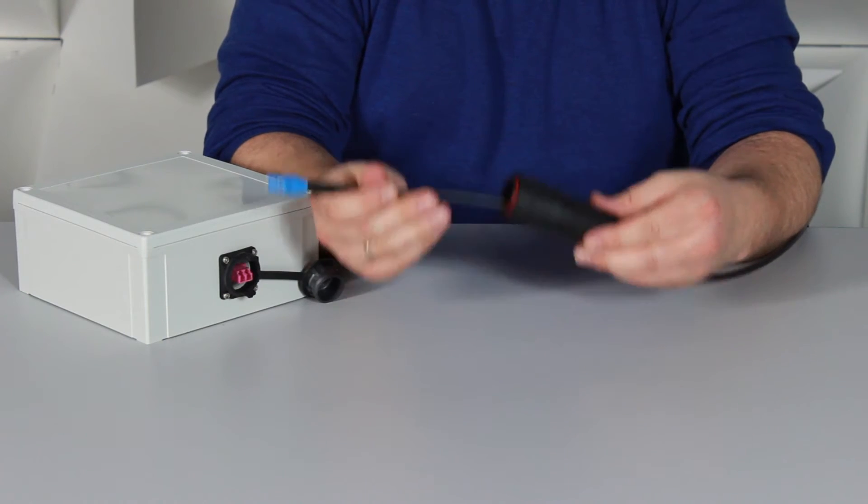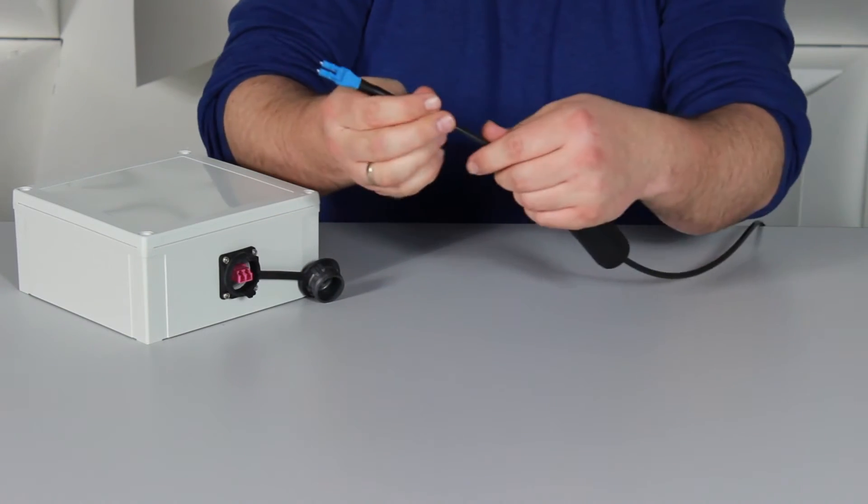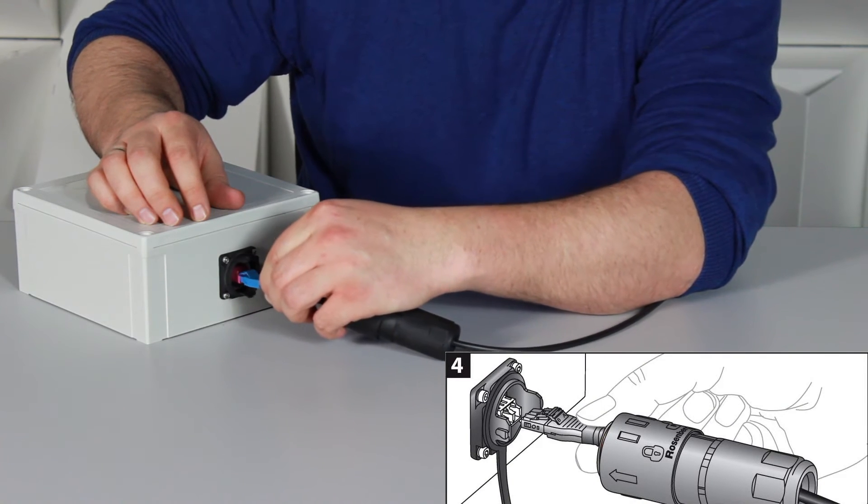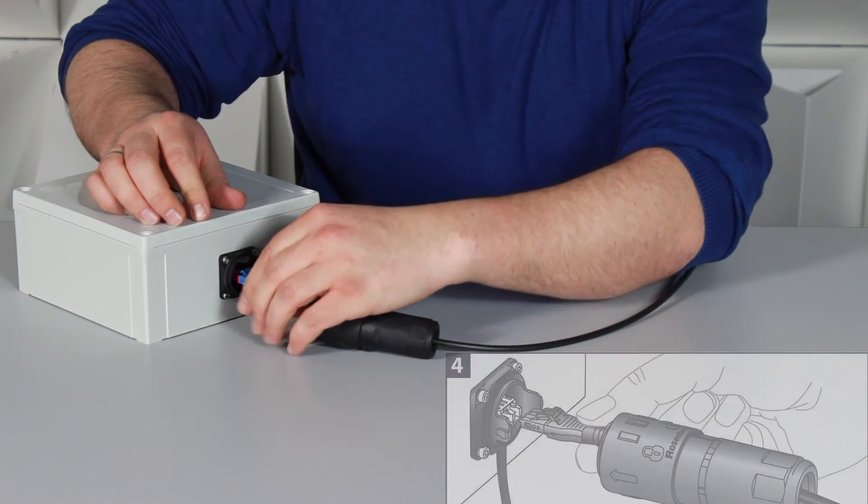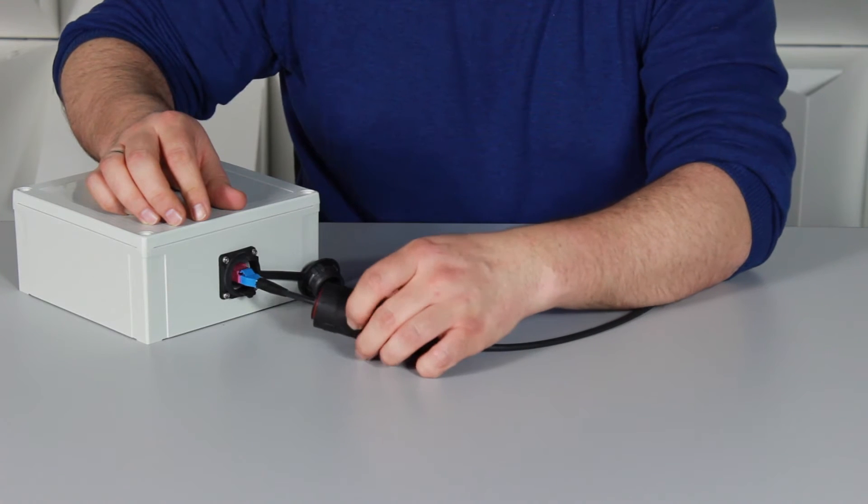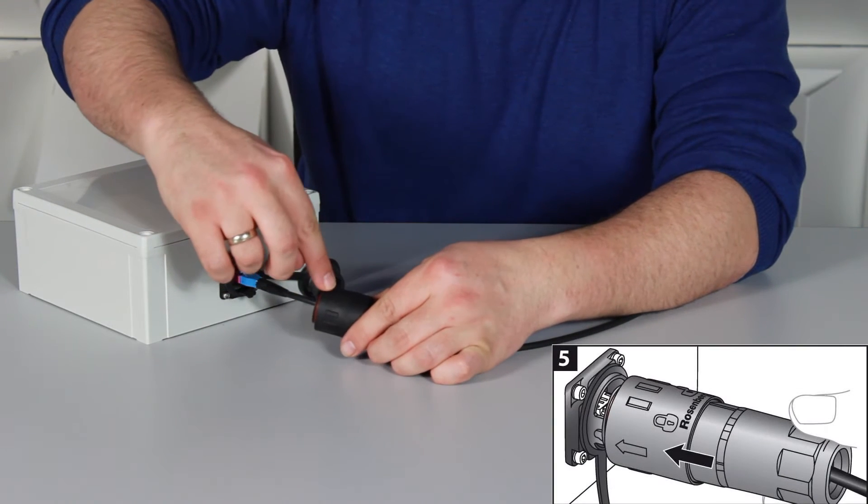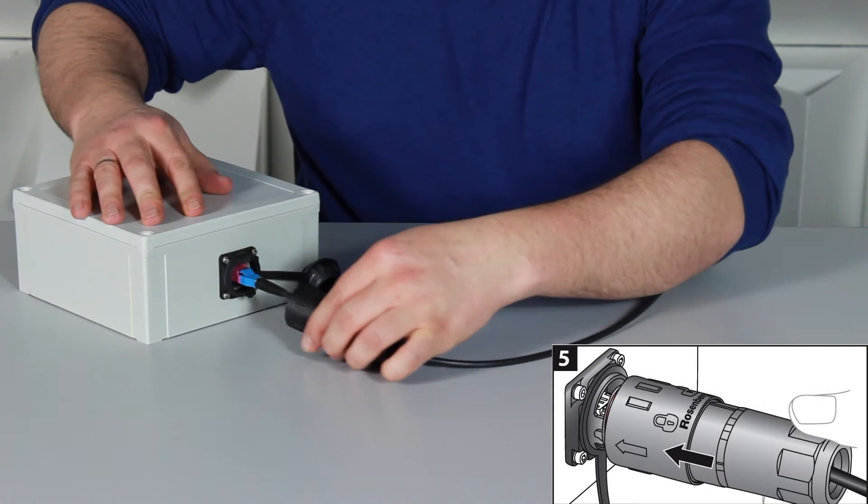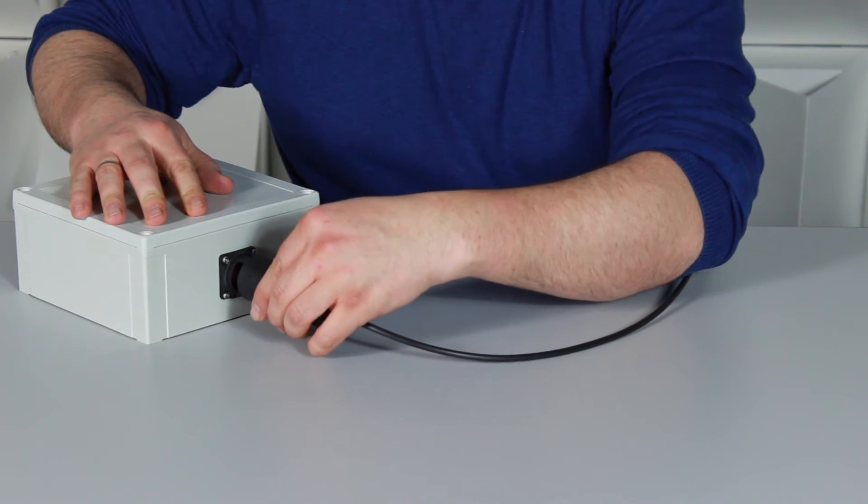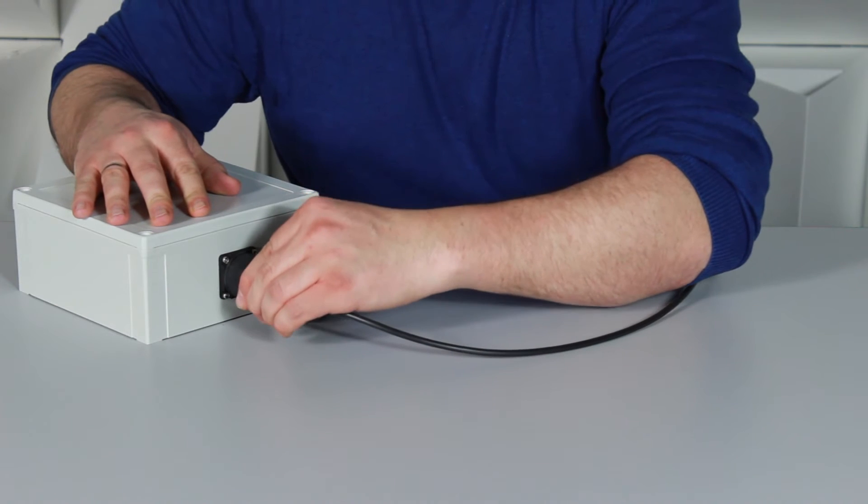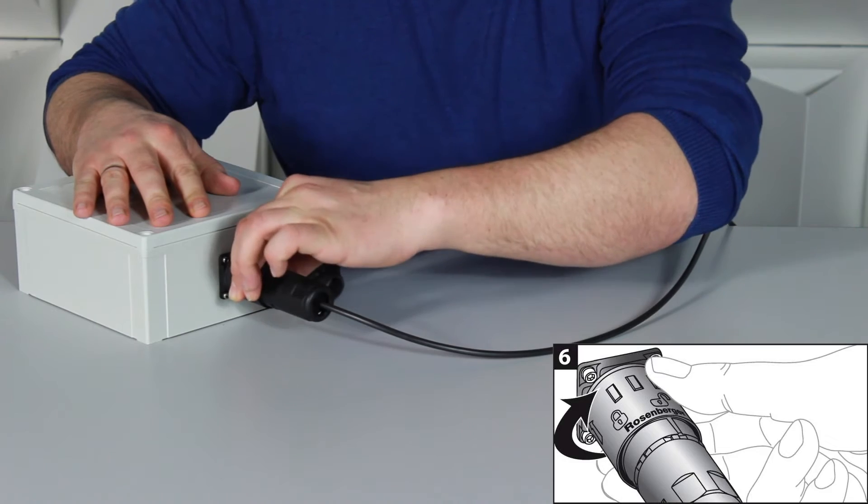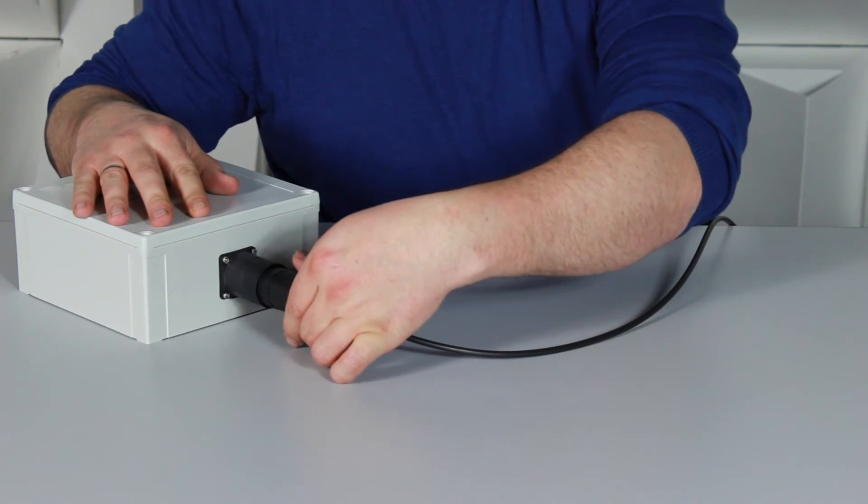Taking our pre-assembled fiber enclosure, we can now connect up our cable. What we need to do is line up the arrow on the fiber enclosure with the latch, insert it, and turn it to lock it into place. And our final step...